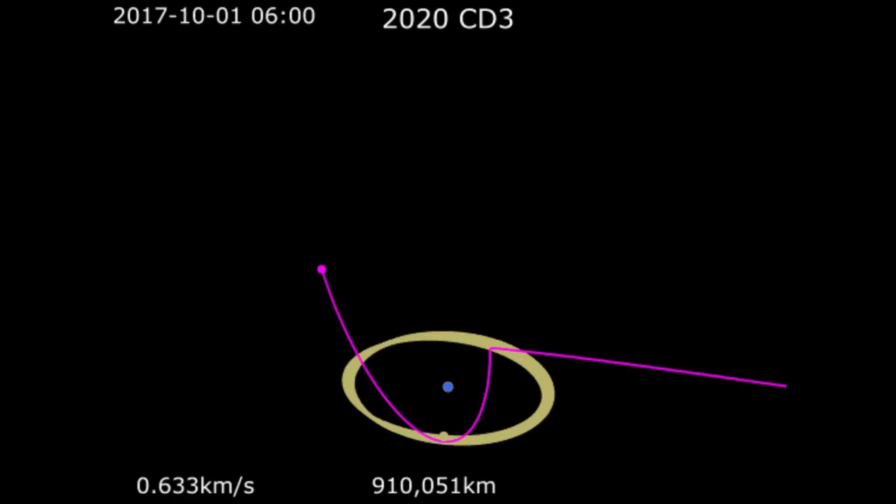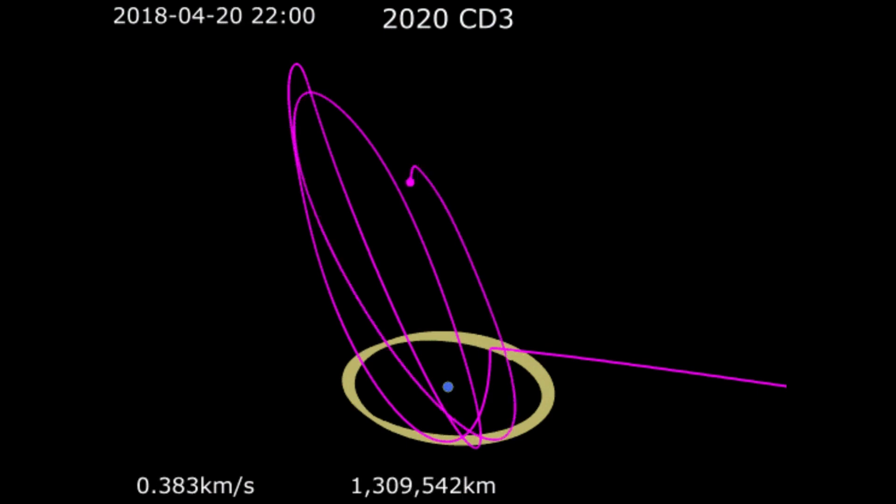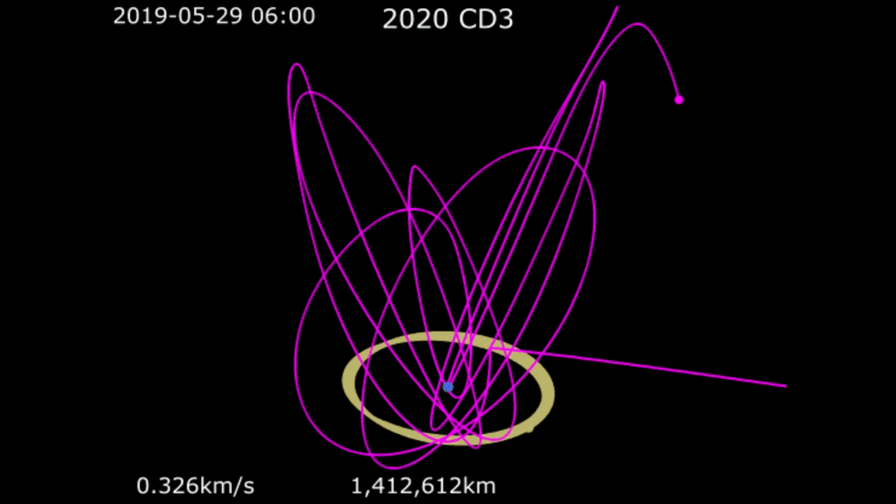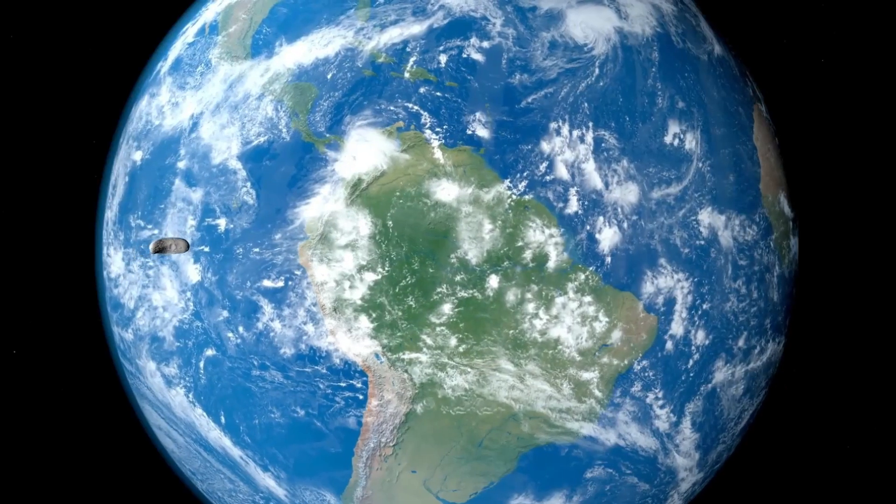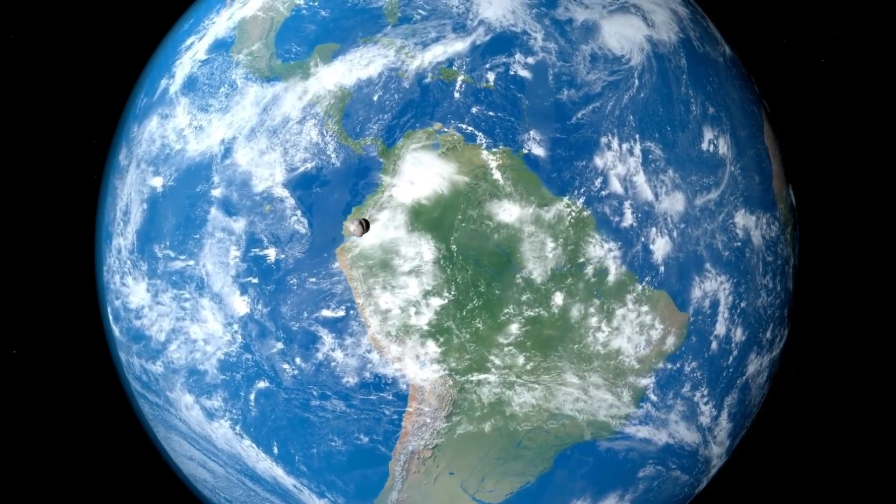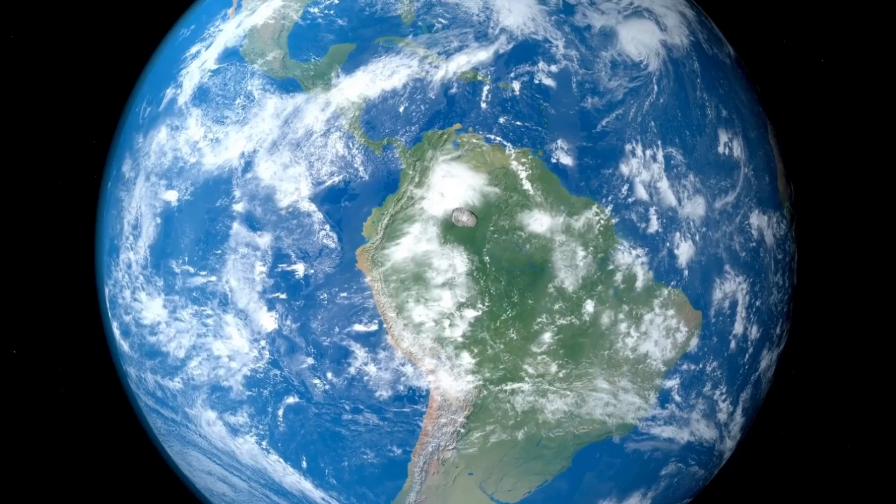Another noteworthy instance is 2020 CD3, a mini-moon that entered Earth's gravitational grasp in 2018 and continued to orbit our planet until 2020. This small asteroid, while relatively brief in its stay, proved to be a treasure trove of information. Researchers were able to gather valuable data that enhanced our understanding of the dynamics between small celestial bodies and Earth's gravity.